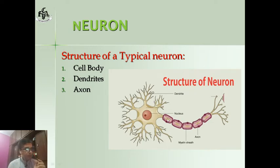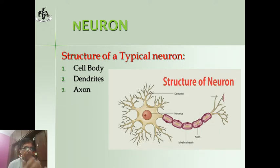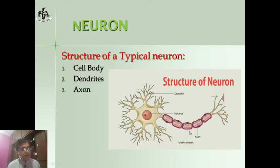This long extension is called the axon. Through the axon, the nerve impulse leaves the neuron. The axon is surrounded by a fatty sheet called the myelin sheath.